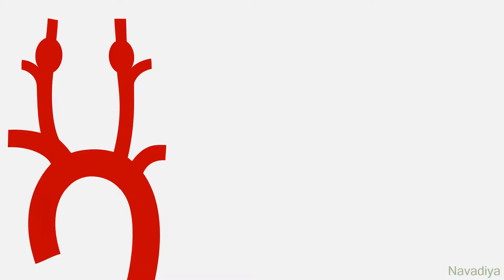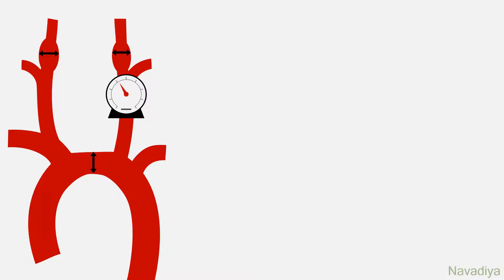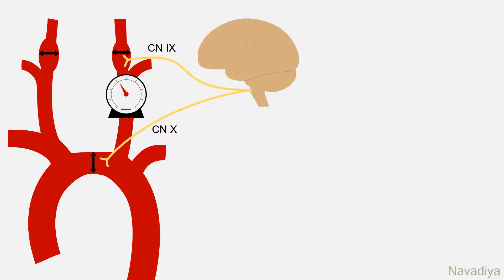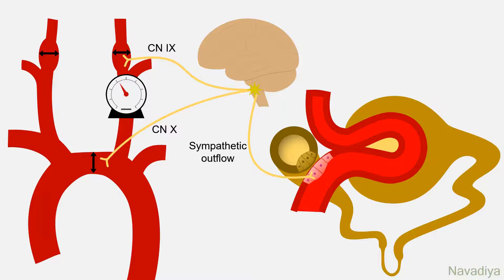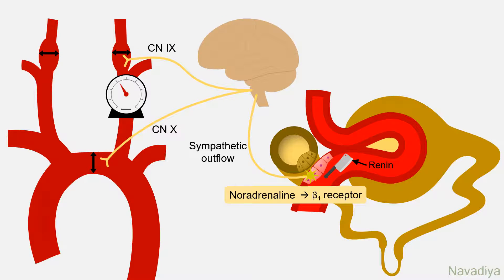First, baroreceptors. They are sensitive to stretch on the vessel wall. When there is a fall in blood pressure, there will be less stretch on the vessel wall. Baroreceptors detect this fall and via cranial nerves 9 and 10 send this information to medullary control centers in the brain. These centers then increase sympathetic outflow to juxtaglomerular cells in the kidney. These nerve endings release noradrenaline which acts on beta-1 receptors on juxtaglomerular cells, causing release of renin.